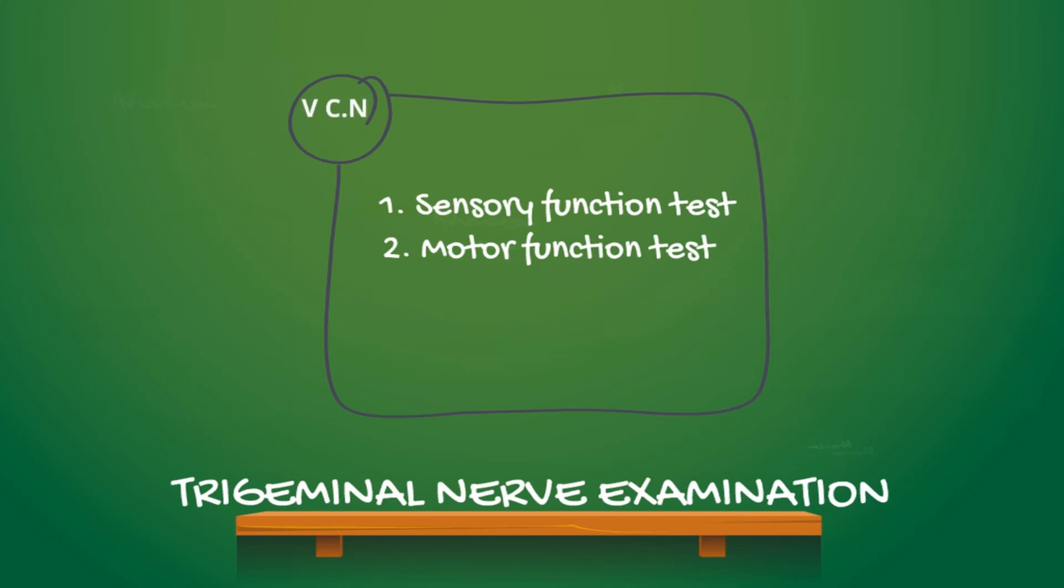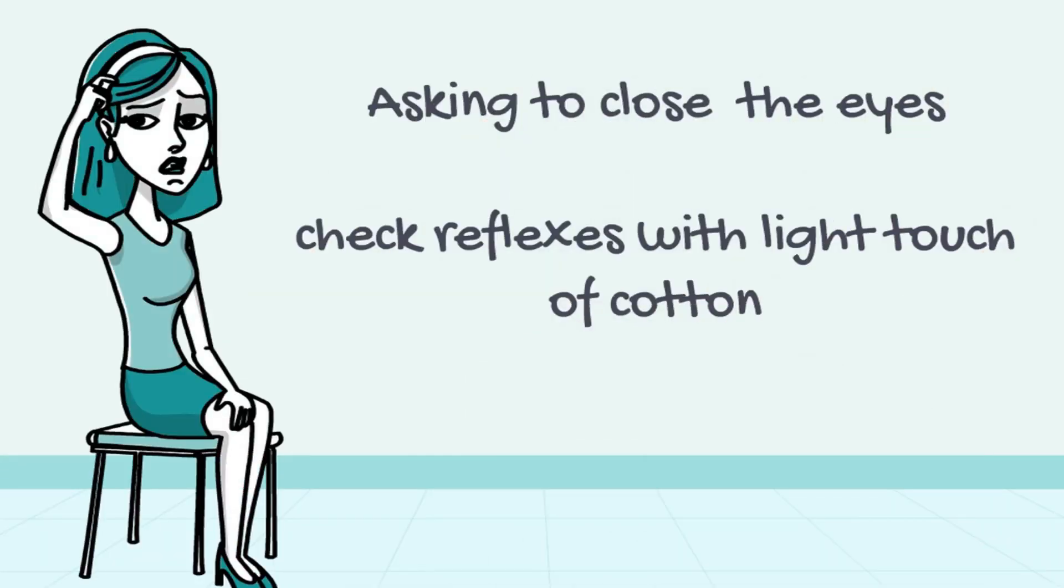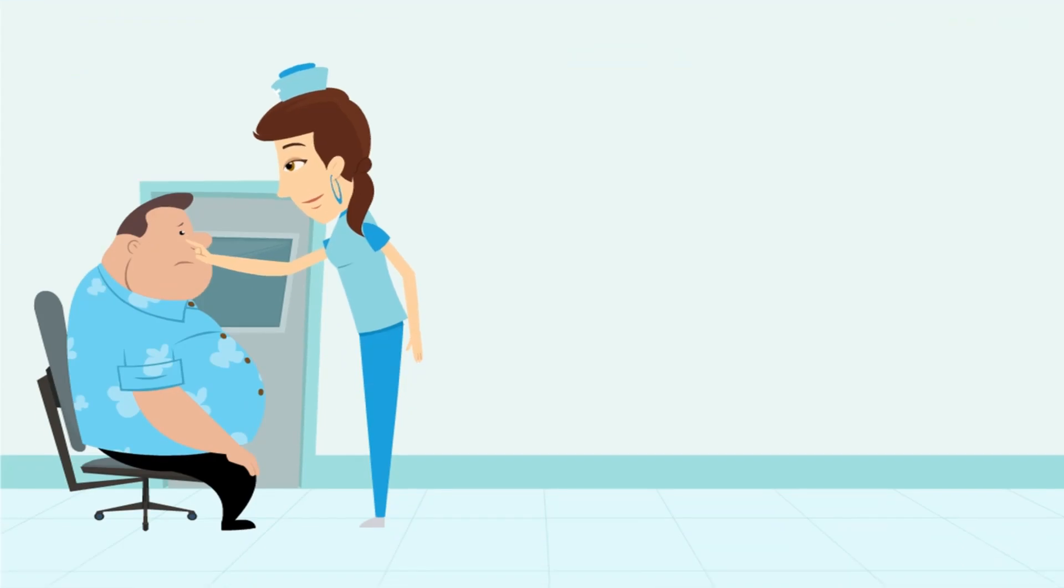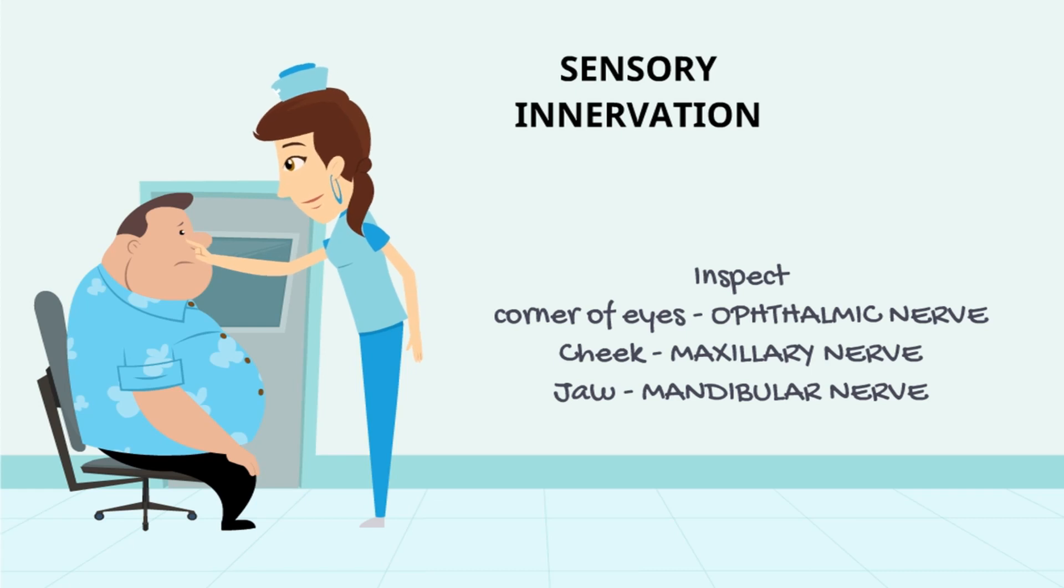Tests for the sensory function and motor function are done. The trigeminal nerve is examined by checking the reflexes with the help of a light touch from a wisp of cotton. This is done by asking the patient to close their eyes and touching the wisp from the corner of the eyes, towards the cheek, and then to the jaw on either side to check the sensory function.